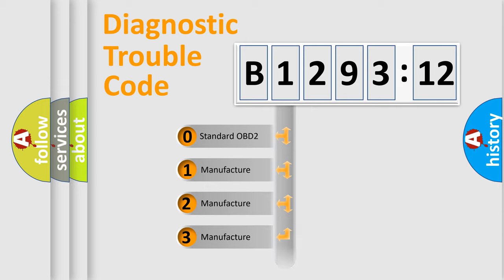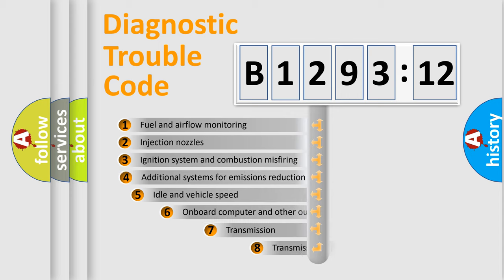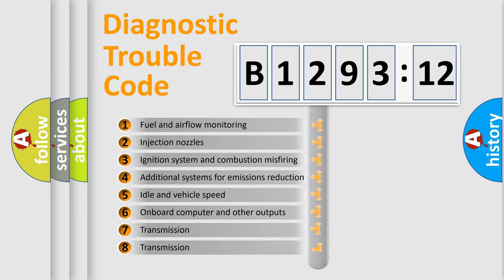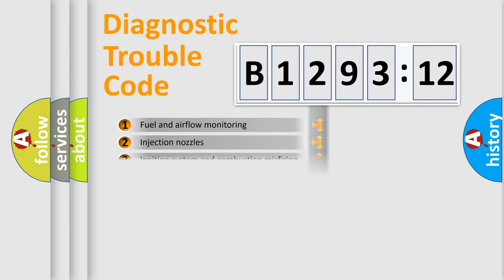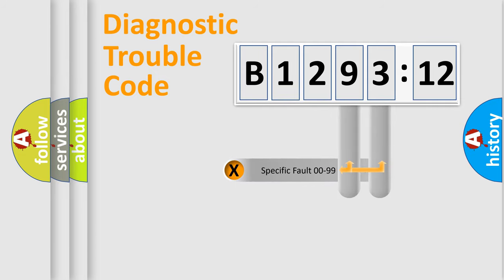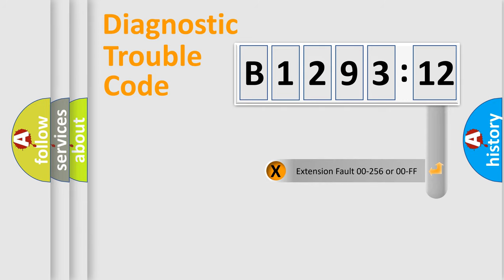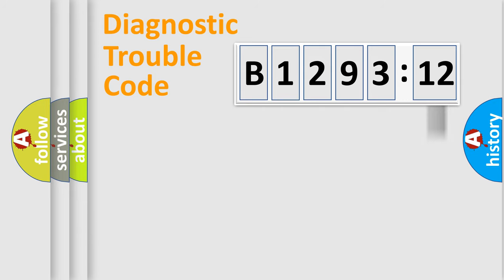If the second character is expressed as zero, it is a standardized error. In the case of numbers 1, 2, or 3, it is a more manufacturer-specific expression of a car-specific error. The third character specifies a subset of errors. This distribution is valid only for the standardized DTC code. Only the last two characters define the specific fault of the group. The add-on to the error code serves to specify the status in more detail.